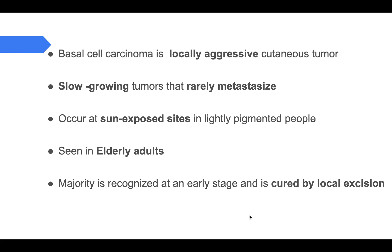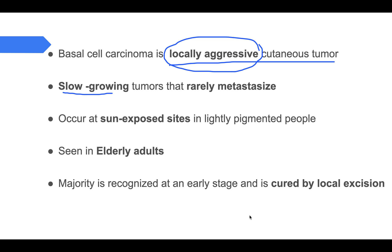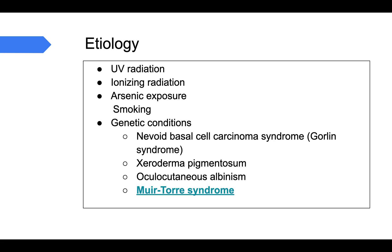Basal cell carcinoma is a locally aggressive cutaneous tumor. It is a skin tumor — it does not involve any mucosal surface, only skin. It is a very slow-growing tumor and it rarely metastasizes; it is mostly locally aggressive only. It occurs at sun-exposed sites, mostly in lightly pigmented people, and is mostly seen in elderly adults. Because it grows slowly and occurs at sun-exposed sites, it is recognized mostly at an early stage and is cured by local excision only.